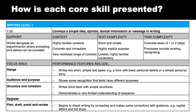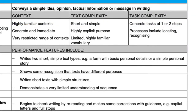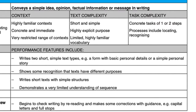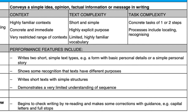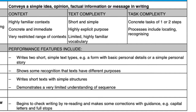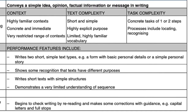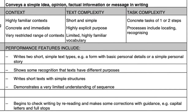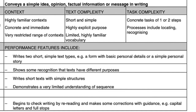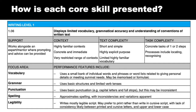Against each focus area are performance features that give quite a lot of specificity about what is required to demonstrate performance at the particular level. For level one writing, a person would be expected to demonstrate they can write two short, simple texts — for example, a form with basic personal details, or a simple personal story. The second writing indicator is about the mechanics of writing, and the indicator statement at level one is: displays limited vocabulary, grammatical accuracy and understanding of conventions of written text.